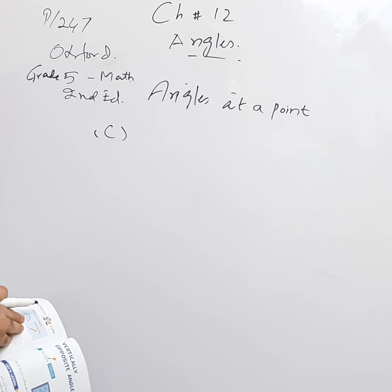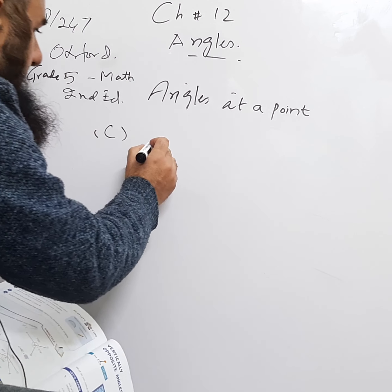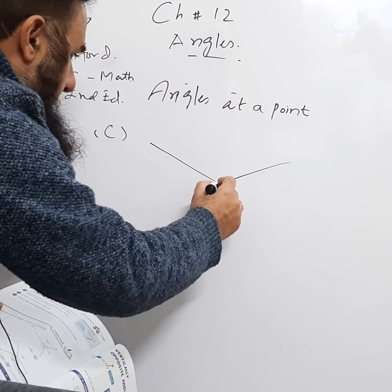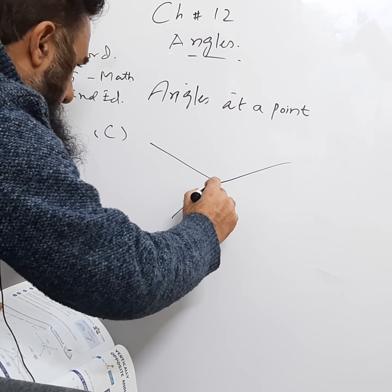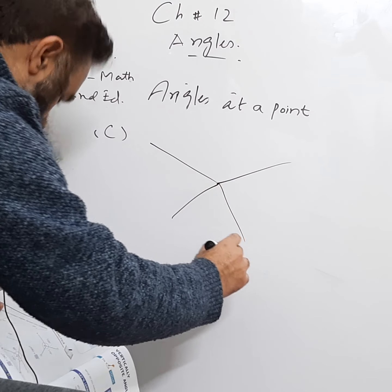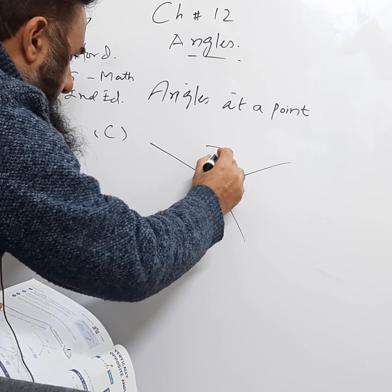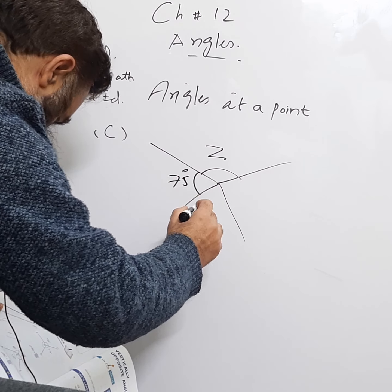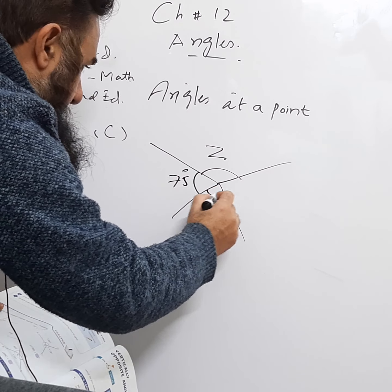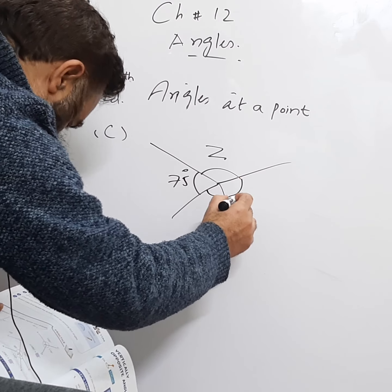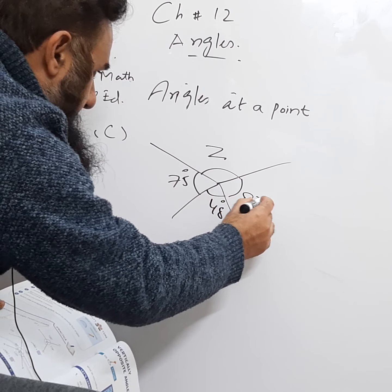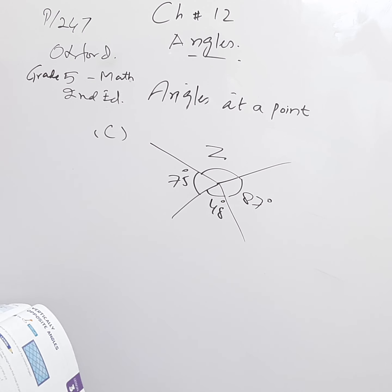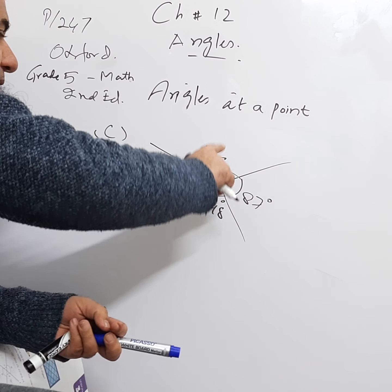We now move to part c. There is another diagram with angles at a point. The angles given are z (unknown), 75°, 48°, and 87°. Since this is angles at a point, we know the sum of all angles equals 360°.